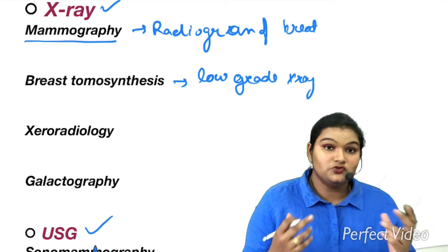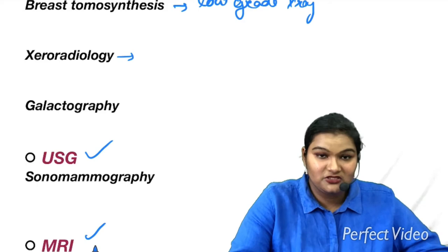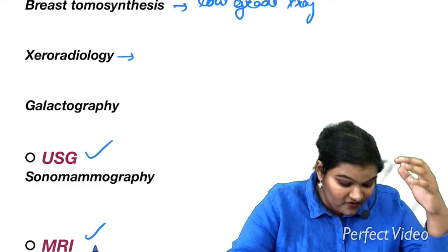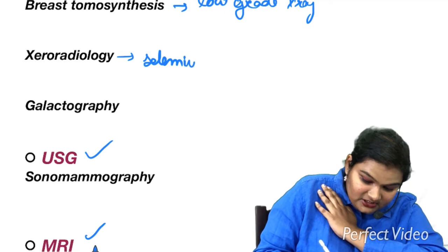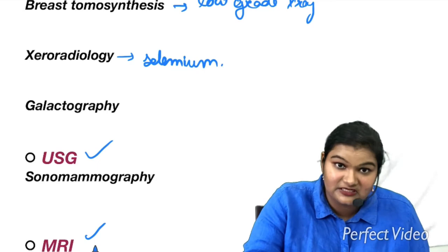Then we have xeroradiology. How does xeroradiology differ from normal radiology? In radiology we get the images on a film, whereas in xeroradiology you get the images on paper, a specific type of paper. In this xeroradiology you use selenium to get the image on paper. We get really good contrast in xeroradiology but the disadvantage is that the exposure to x-rays is tremendous. It's very high and you use it in breast imaging.